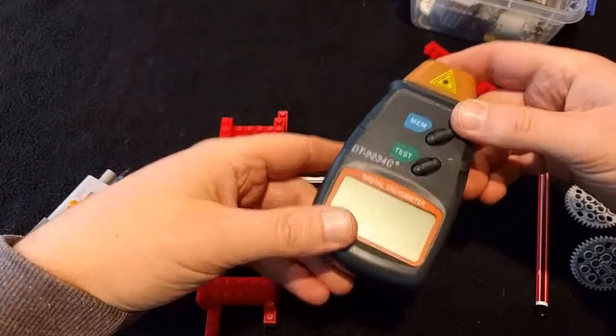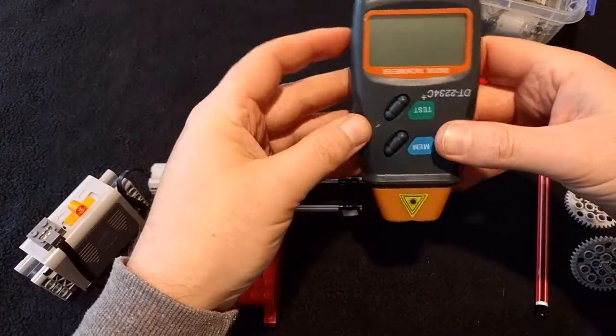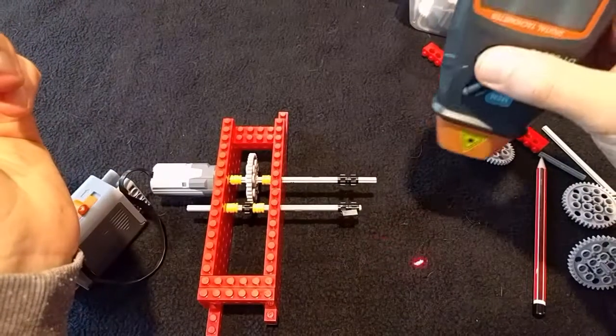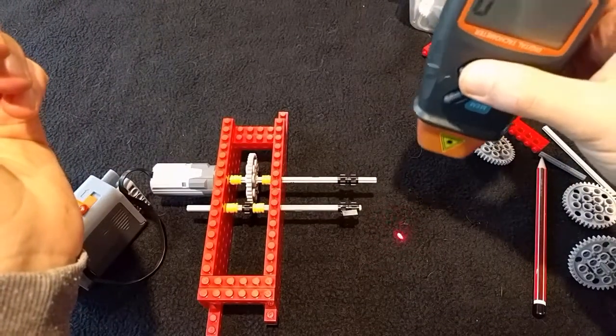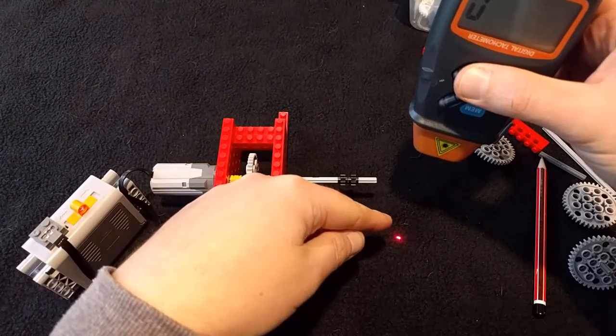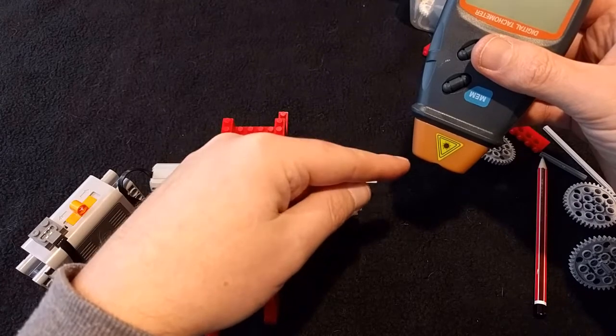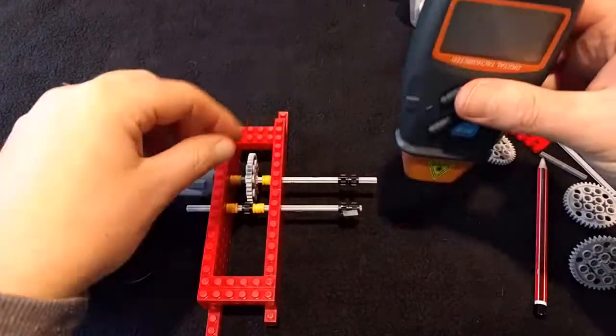It's called a photo tachometer because photo means light. If I press the test button, you can see it makes a little laser spot. That laser spot can be reflected back from the surface it hits up to here, and there's a sensor in there that can detect how much light is coming back.